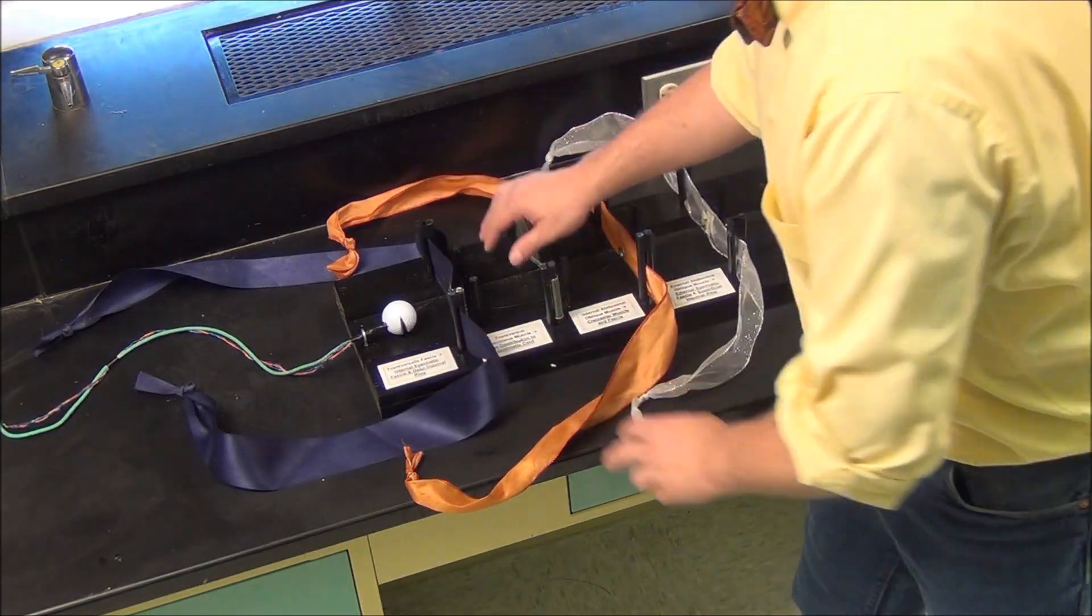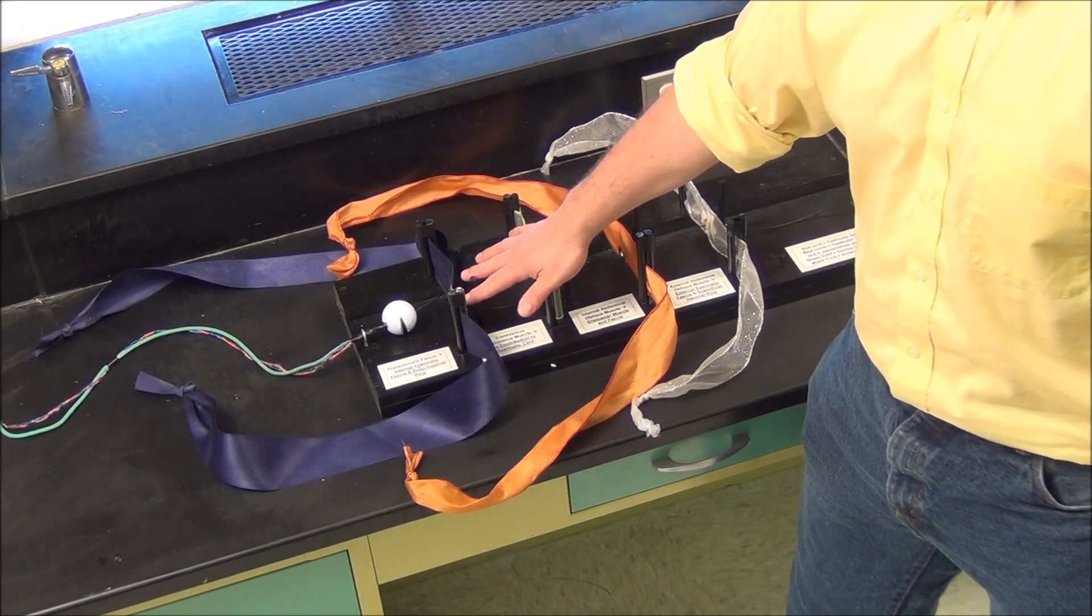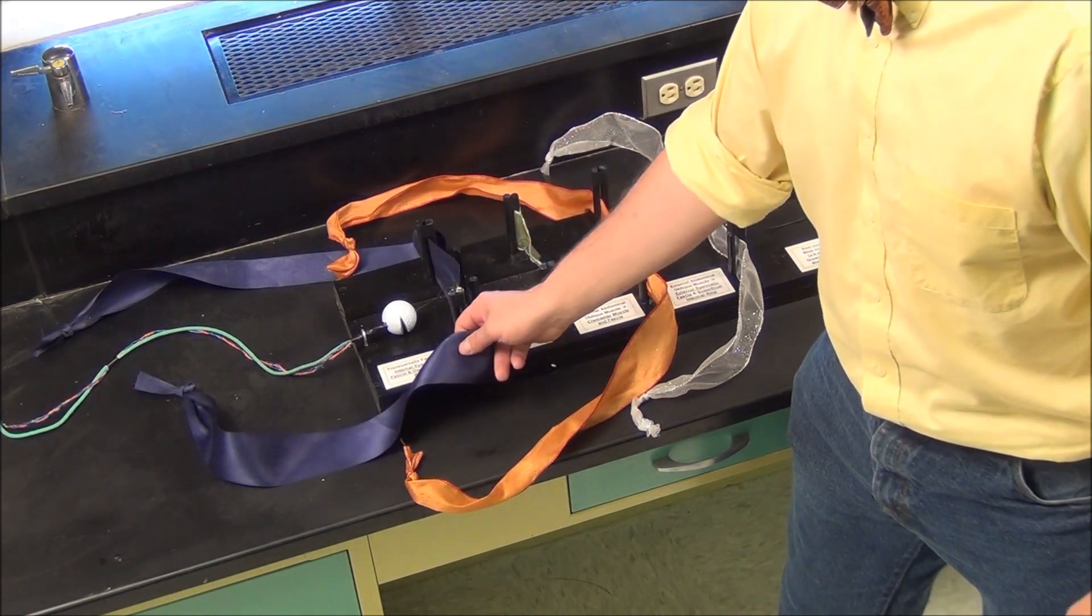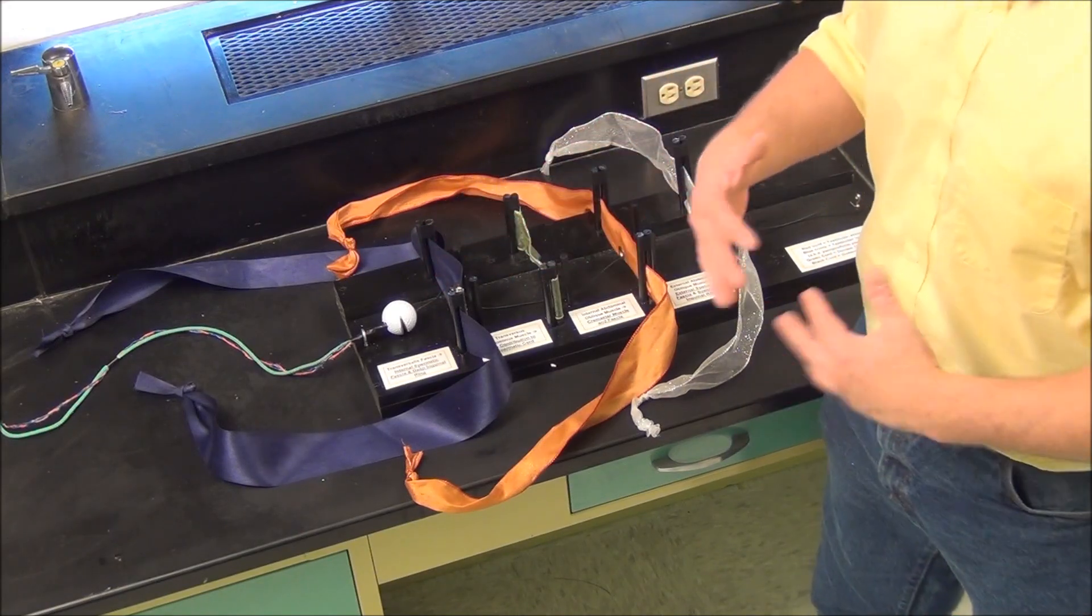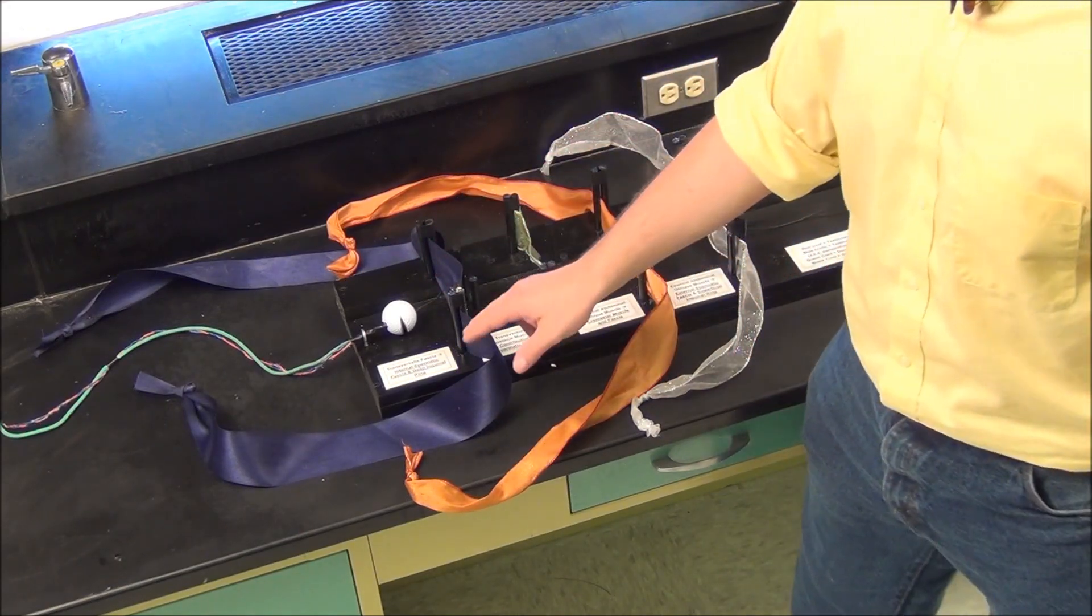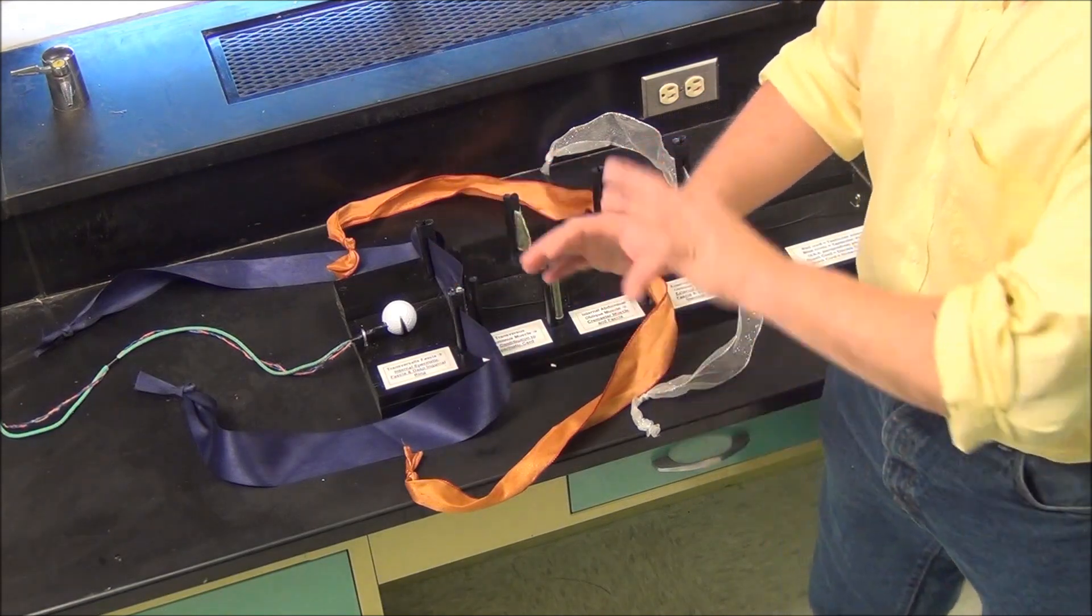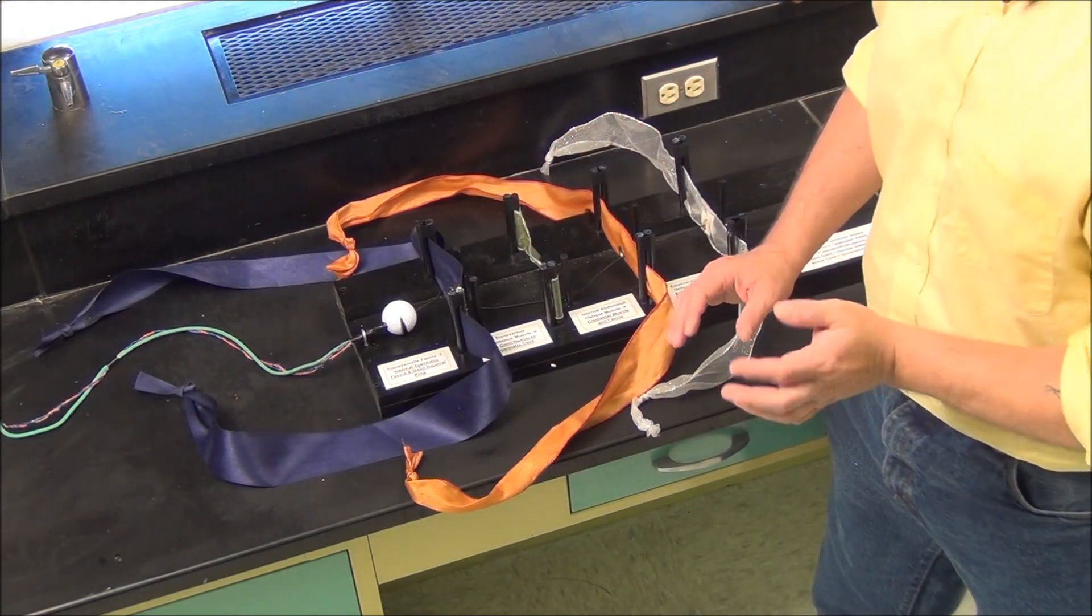So, here's the layers. First layer is going to be our transversalis fascia, here in blue. This is going to be what the testes pushes through and gets surrounded by to form the internal spermatic fascia. And the little remnant of that left on the body wall is the deep inguinal ring.